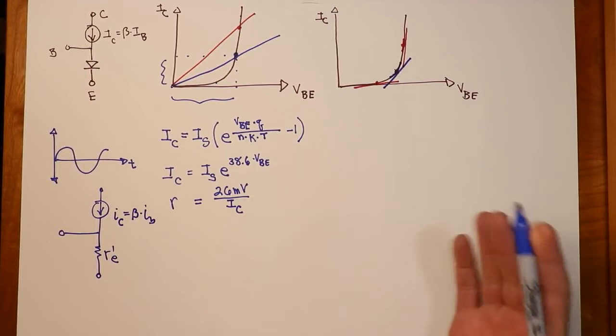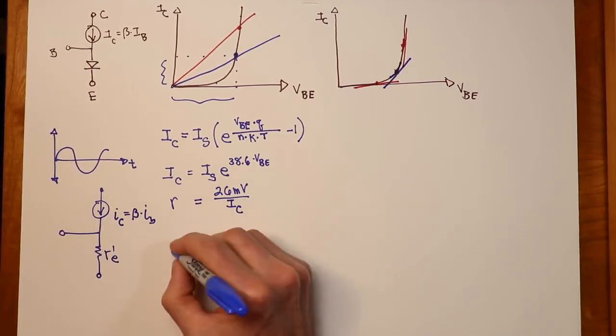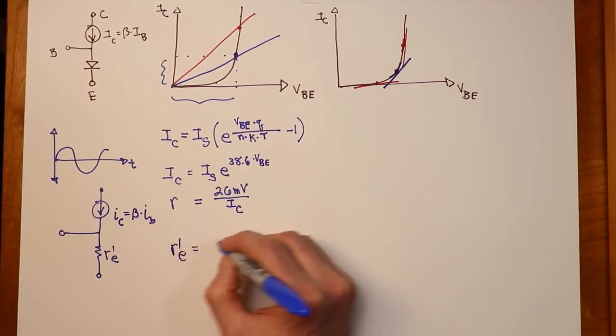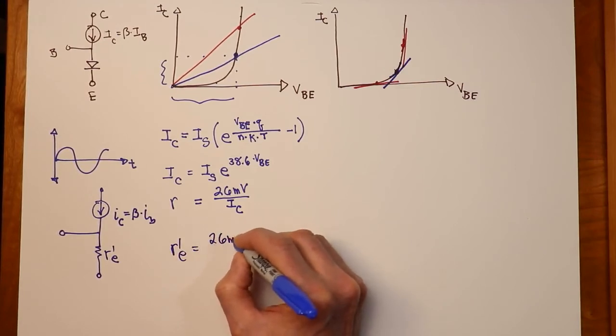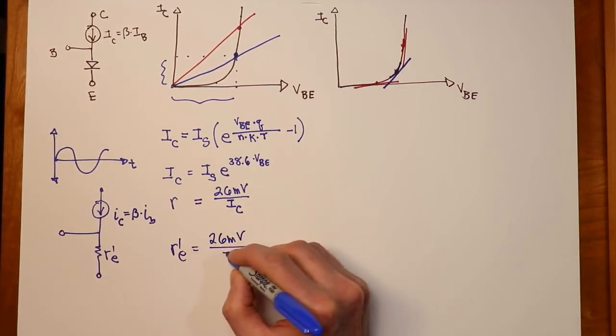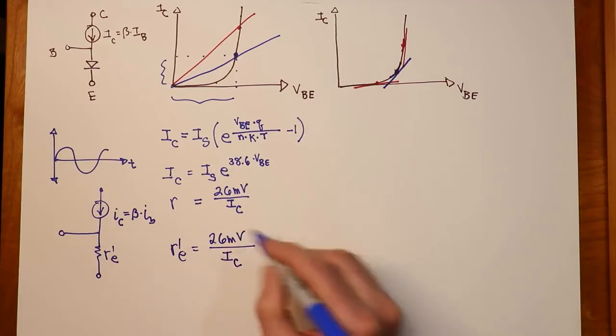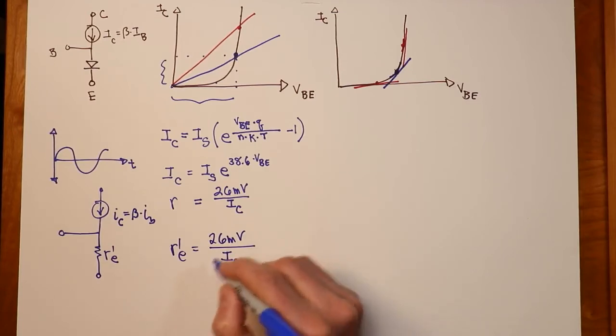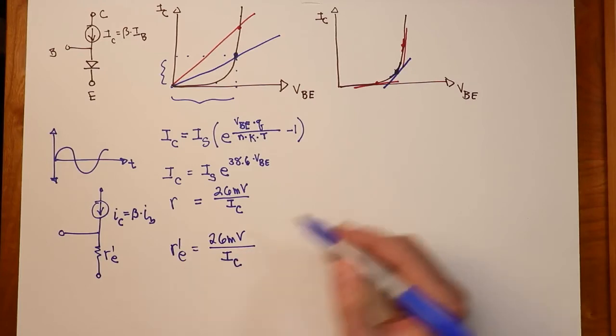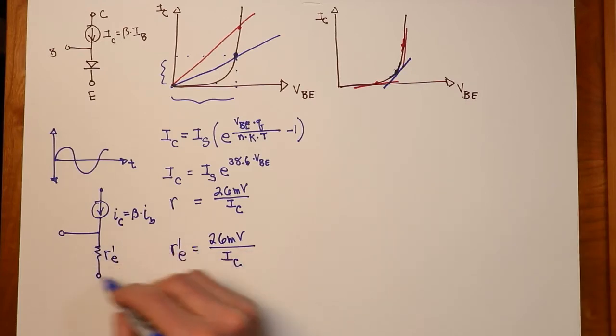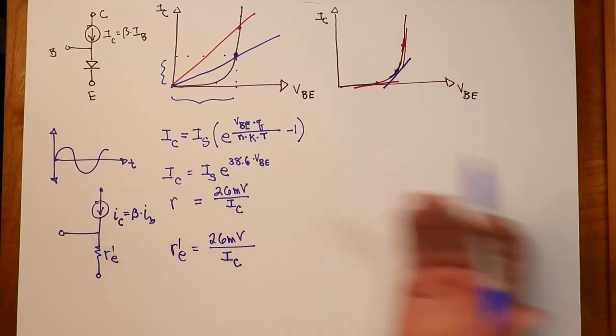So we can just say, look, the value for R prime E is just 26 millivolts, a constant, divided by whatever the collector current is. Now this kind of gives you a clue into why we were so interested in making sure that the collector current was stable, because without a stable collector current, this R prime E is going to change. And as we will see very shortly,